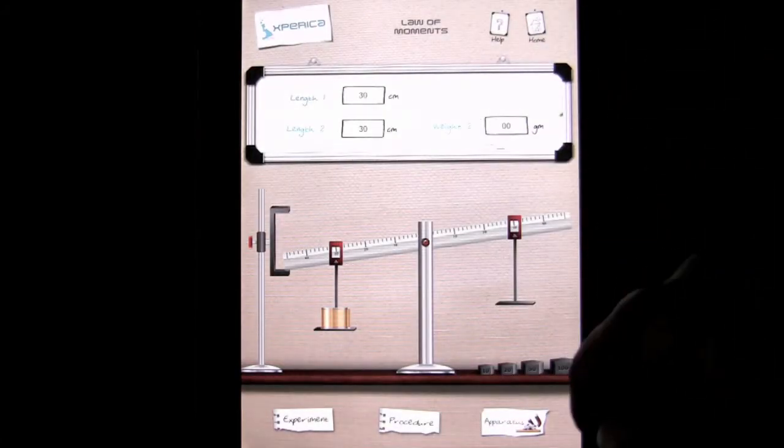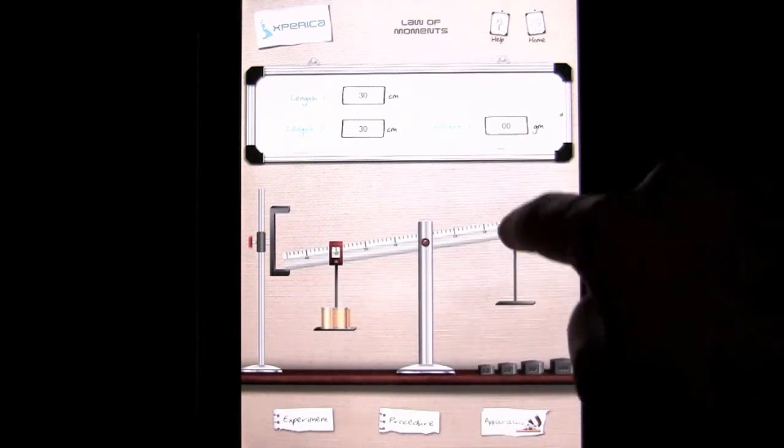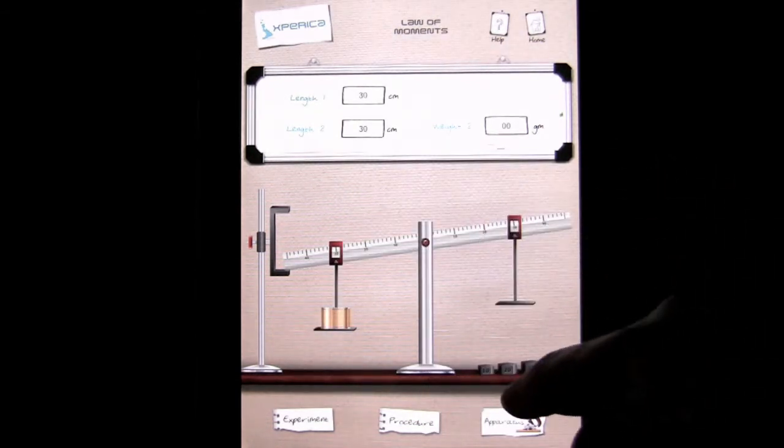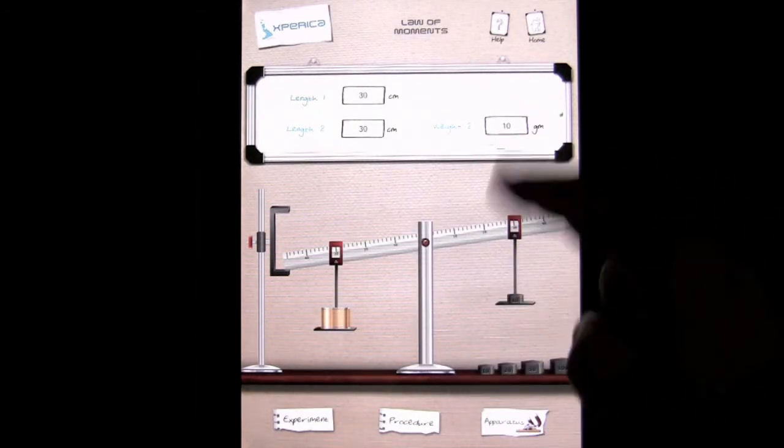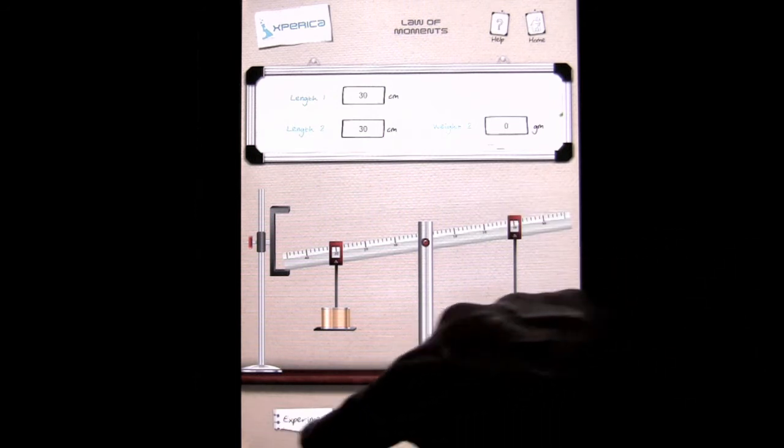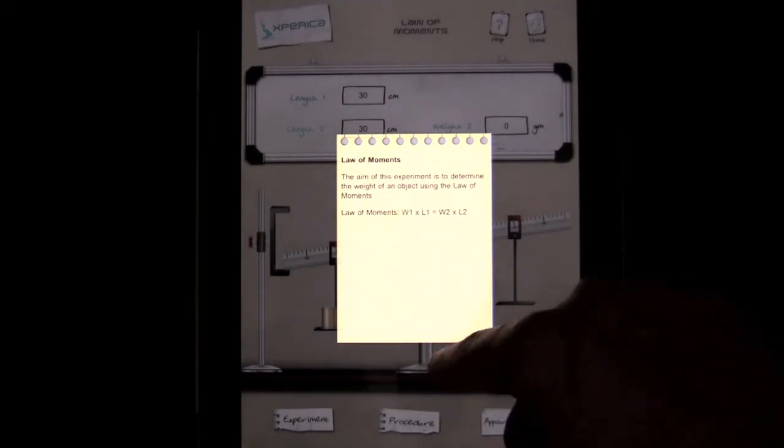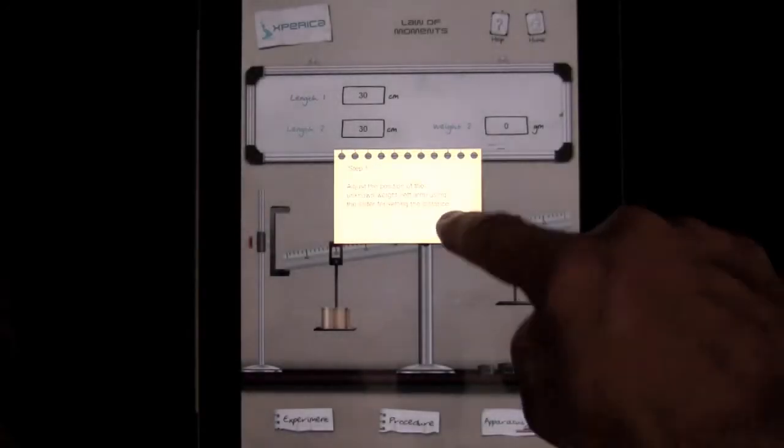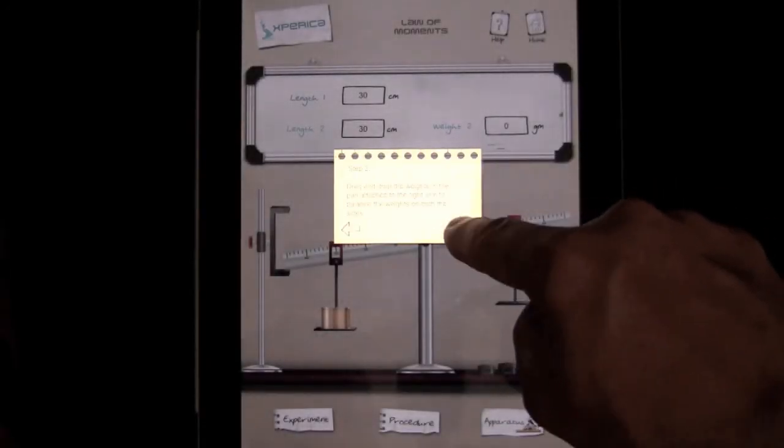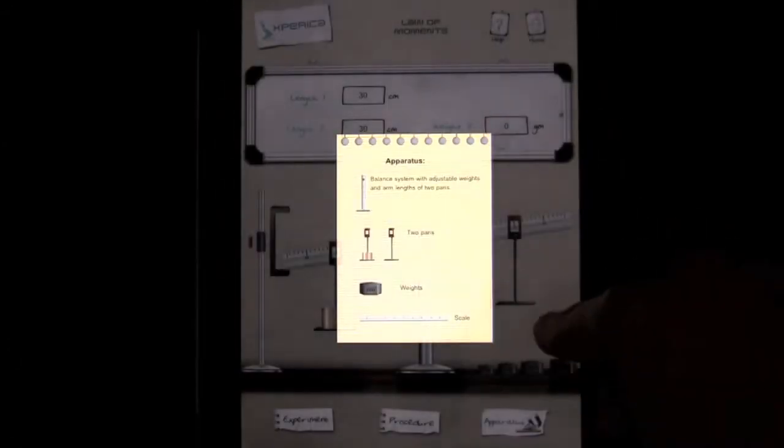Here is your whiteboard, and then here is your apparatus that you will work on the experiment. Down below, you have your experiment, procedure, and apparatus, and you can dive into those and figure out what you are trying to do. There is the procedure with step-by-step instructions, and then you can see the apparatus that you are using. Go back home.